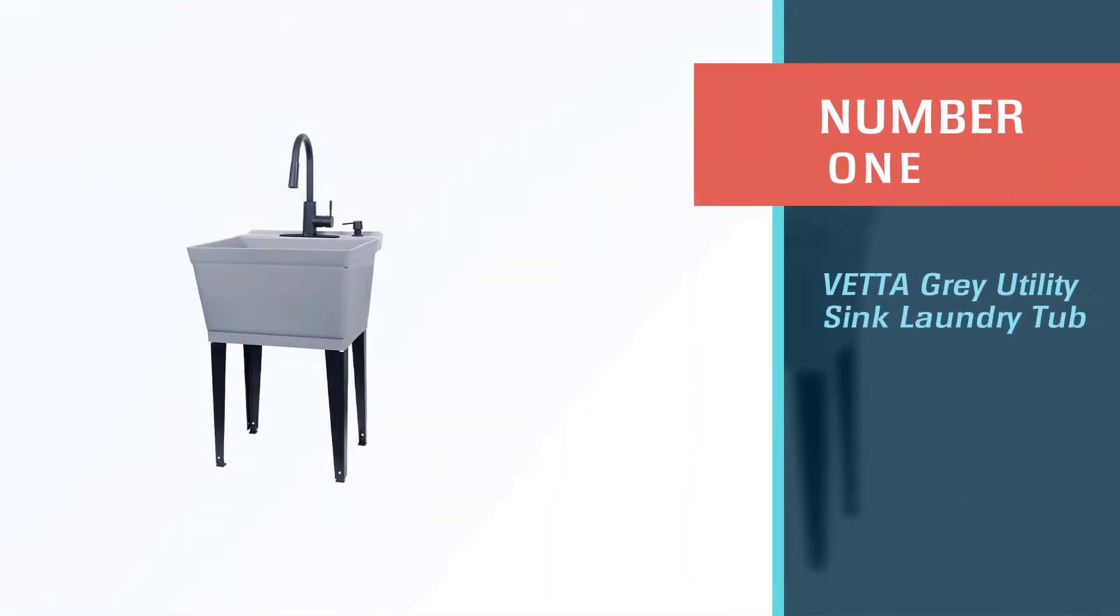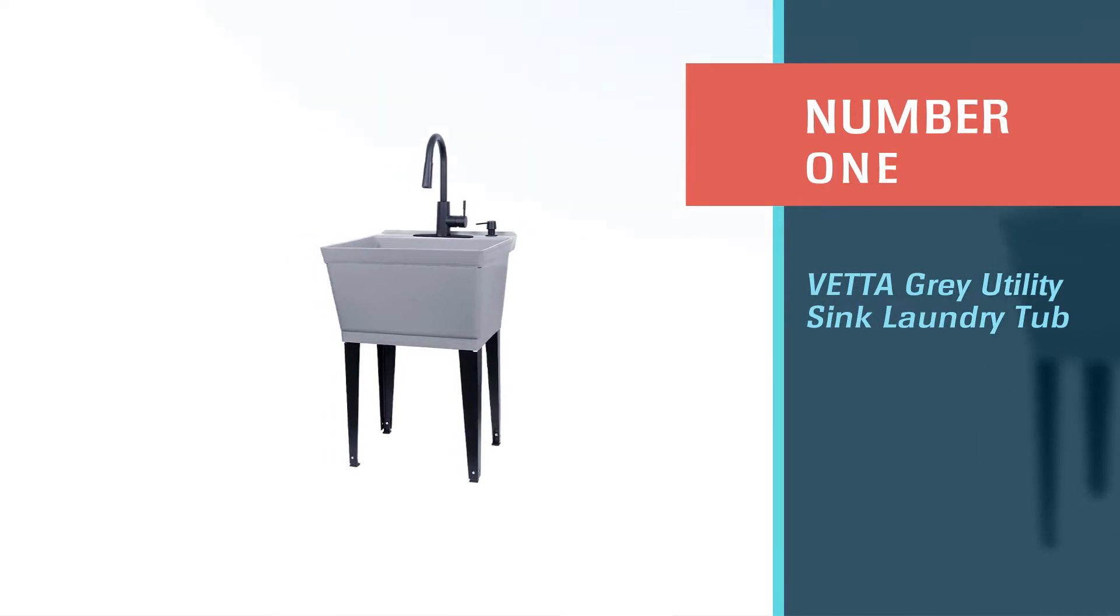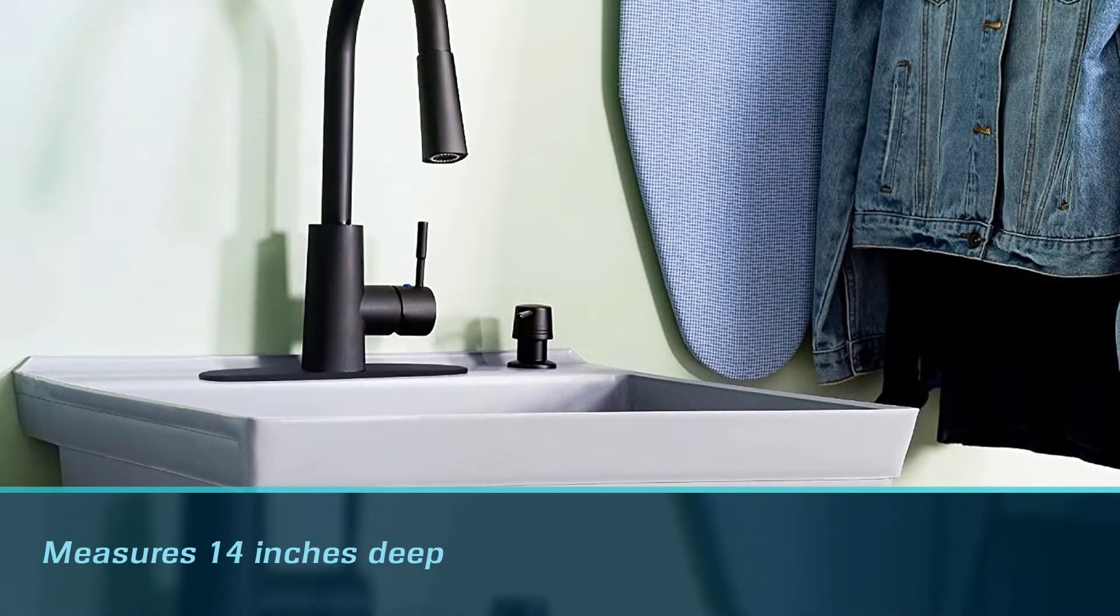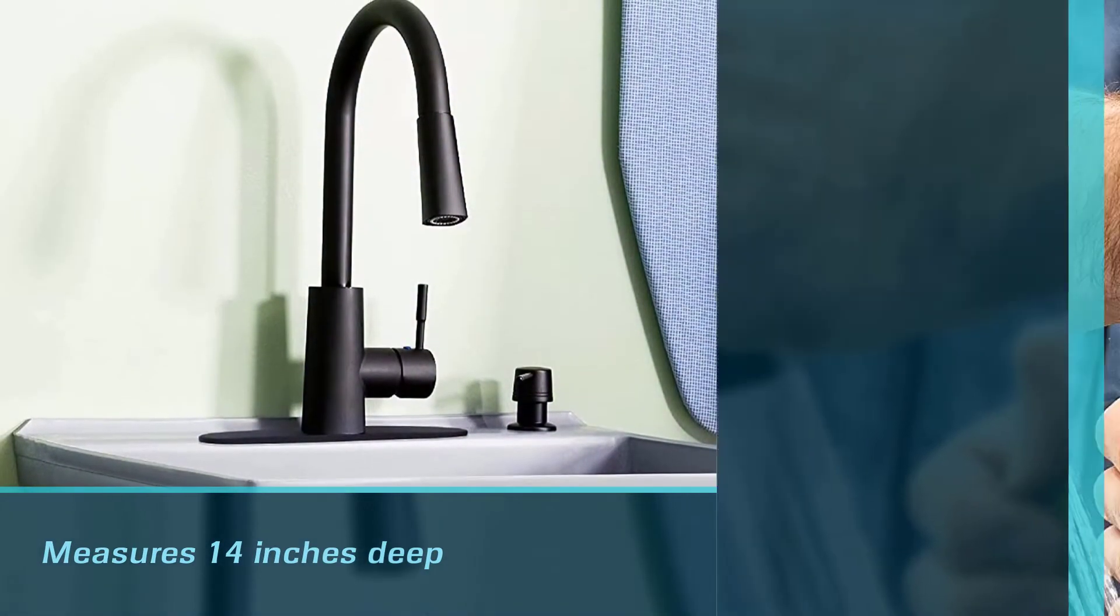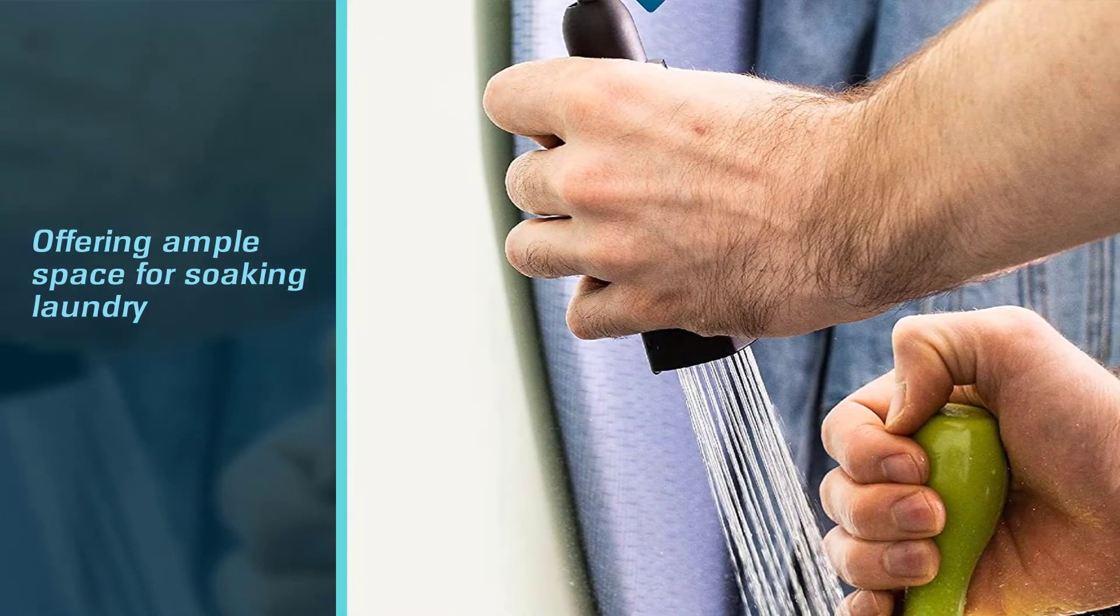Number one, most popular: Veta Gray Utility Sink Laundry Tub. The Teheila utility sink from Jackson Supplies checks all the boxes for what a supply sink should do. Its larger basin measures 14 inches deep, nearly 23 inches wide, and 23.5 inches from front to back.